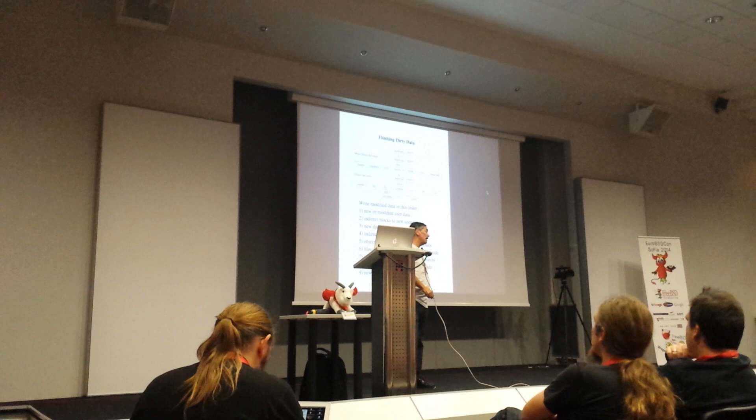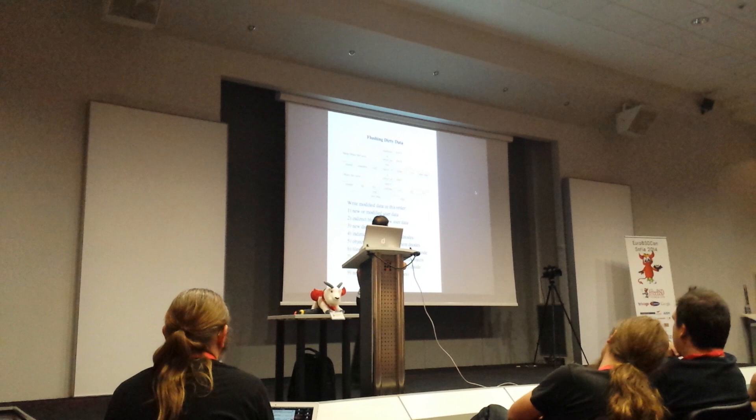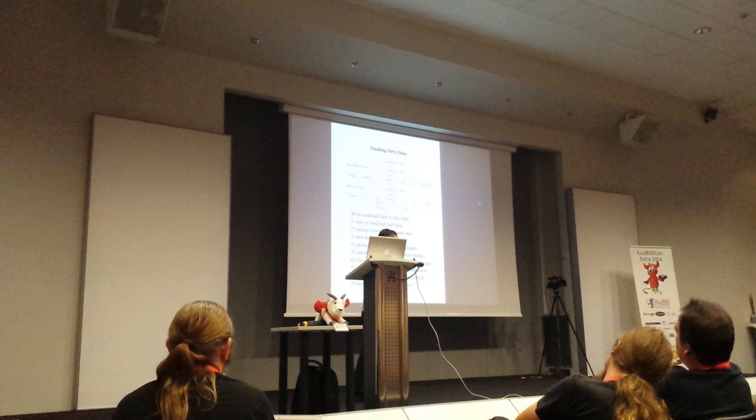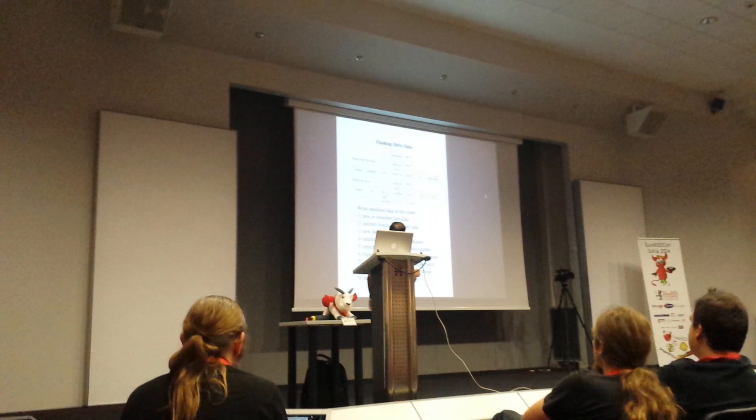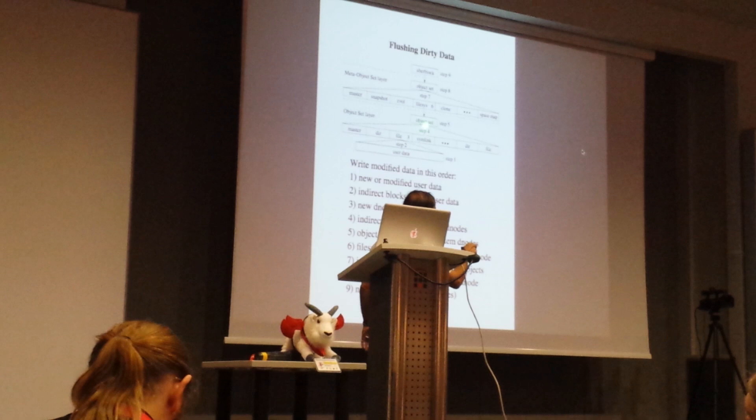And if it was a double indirect block, the block above it would change because this has changed, and therefore the thing that points at it changed. So you have to trickle your way all the way up through all the indirect levels until you finally get to the inode. And now the inode is pointing to a new block, so the new d-node has to be written.